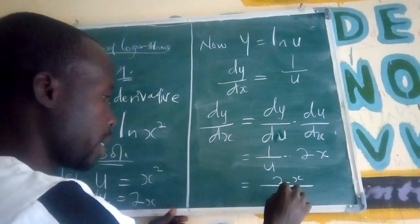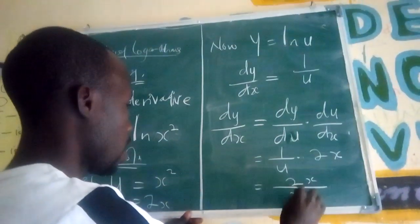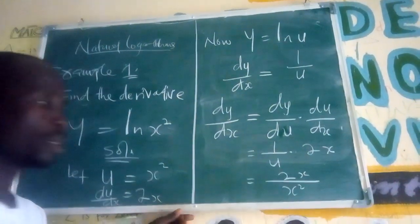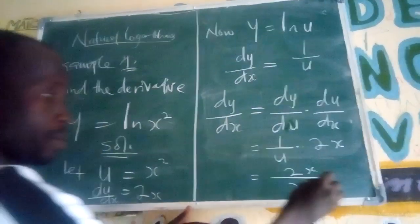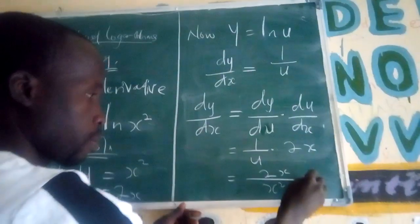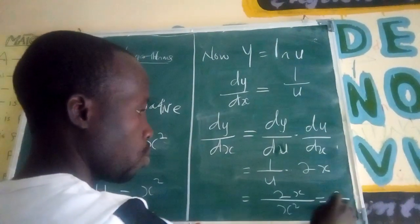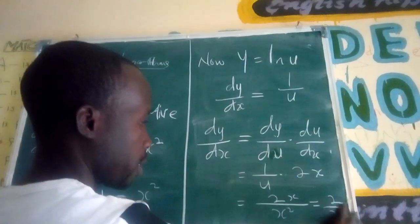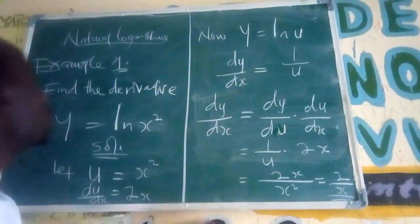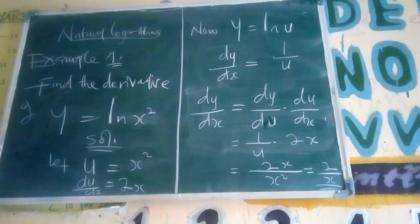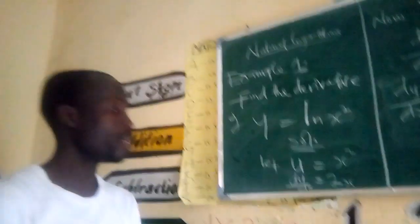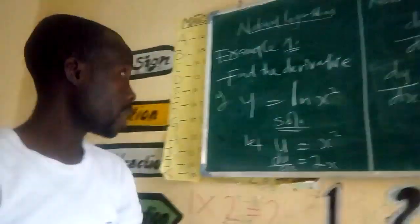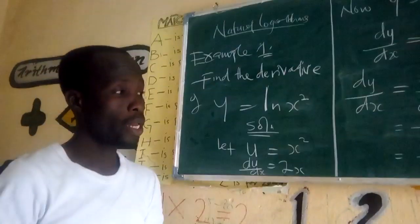So we write 2x over x squared, which simplifies to 2 over x. So the derivative of ln(x squared) is 2 over x.